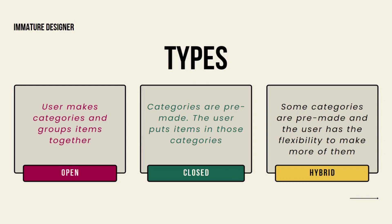Next come the different types of card sorting. Card sorting is of three types: first is open card sorting, second is closed card sorting, and the third one is hybrid card sorting.